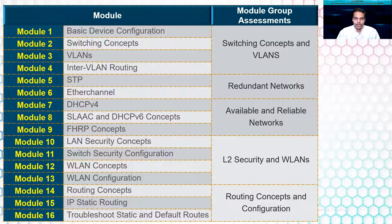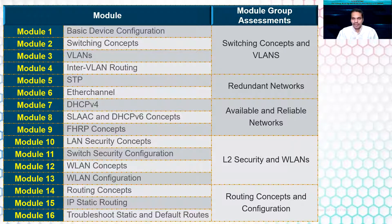As an overview, these are the different modules planned in this course. Module 1 covers basic device configuration working with switches and routers — building on what was covered in ITN. Module 2 covers switching concepts, Module 3 provides the basics of VLANs, and Module 4 covers inter-VLAN routing. These four modules lead to the first module group assessment: the Switching Concepts and VLANs exam.